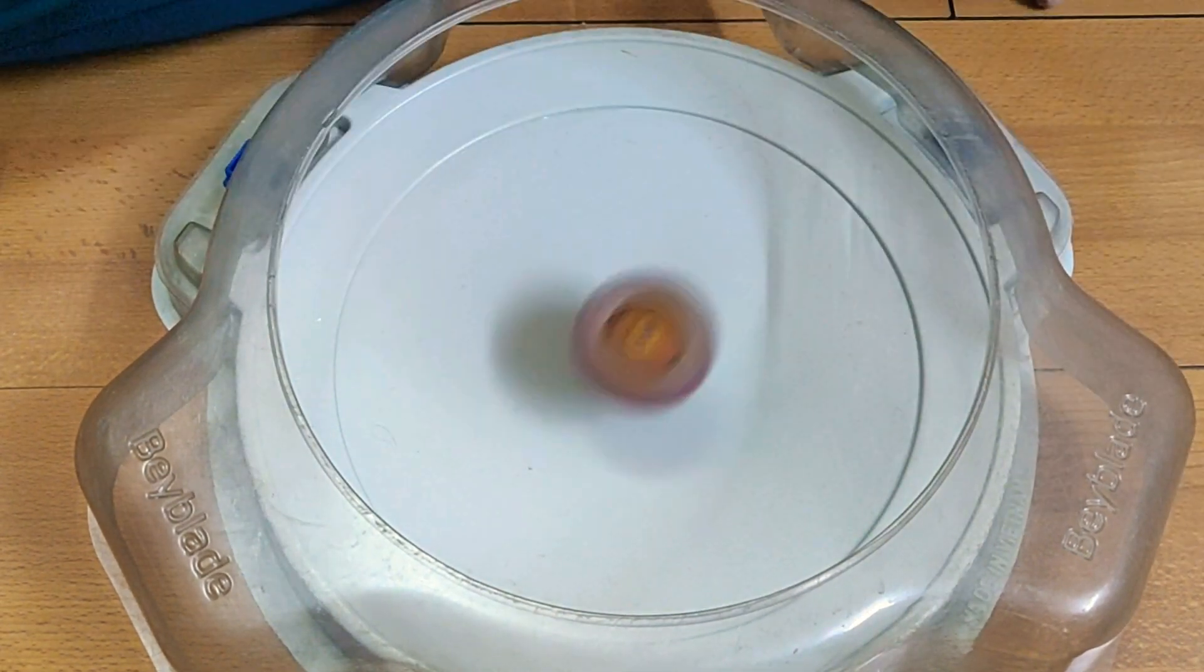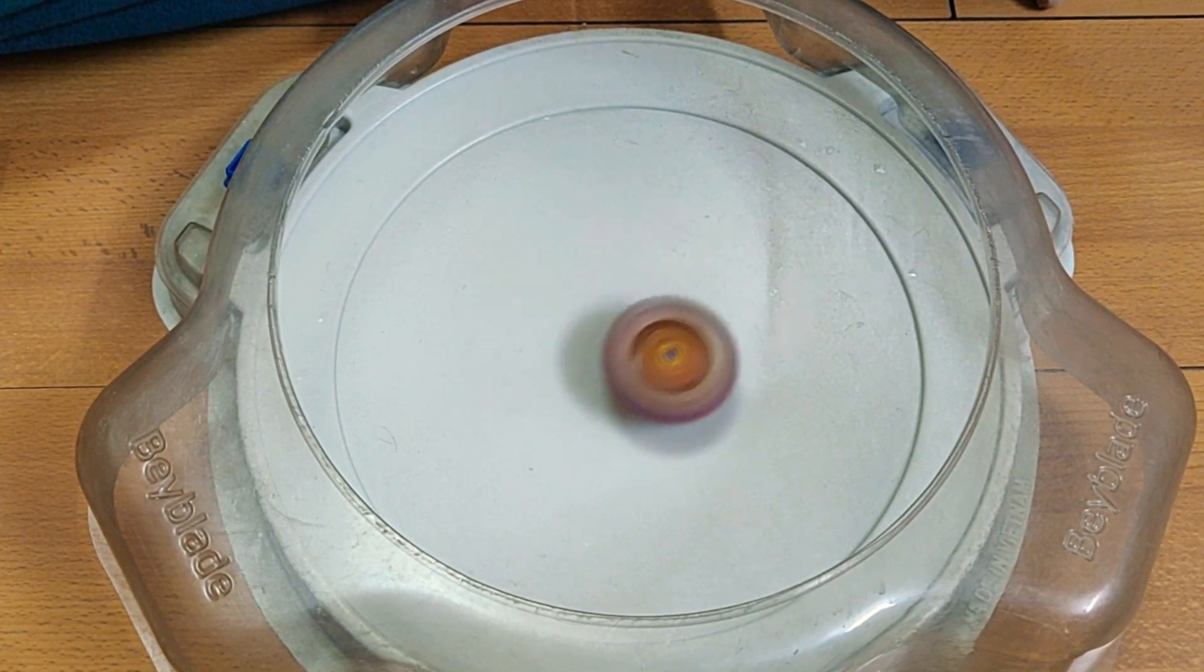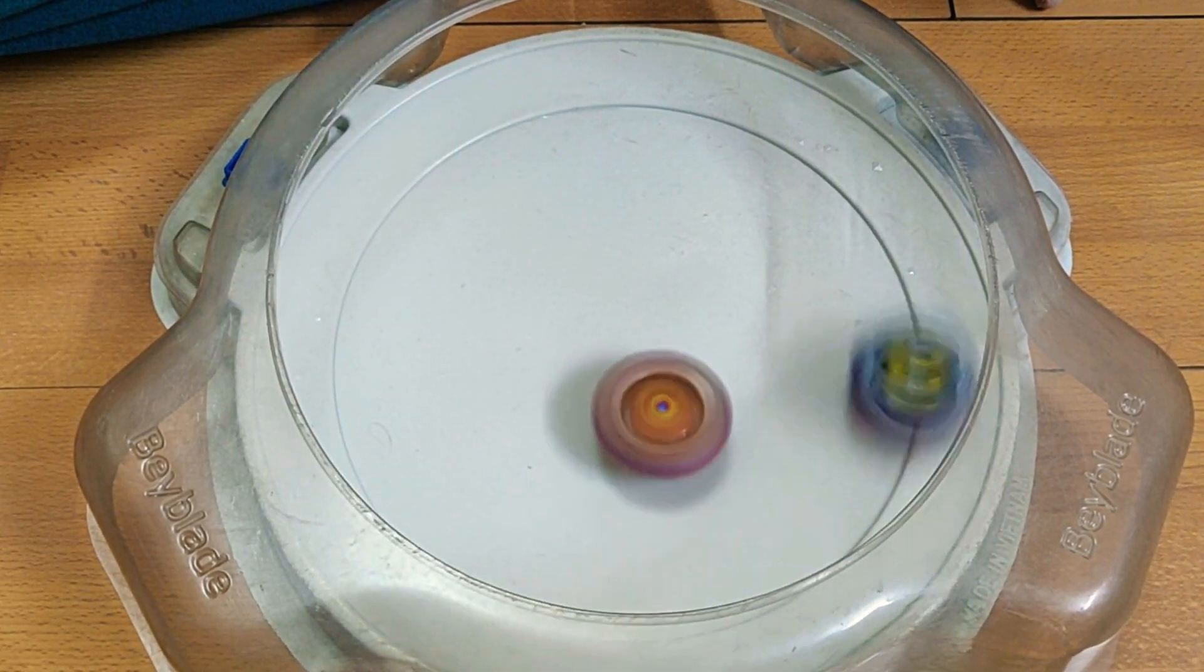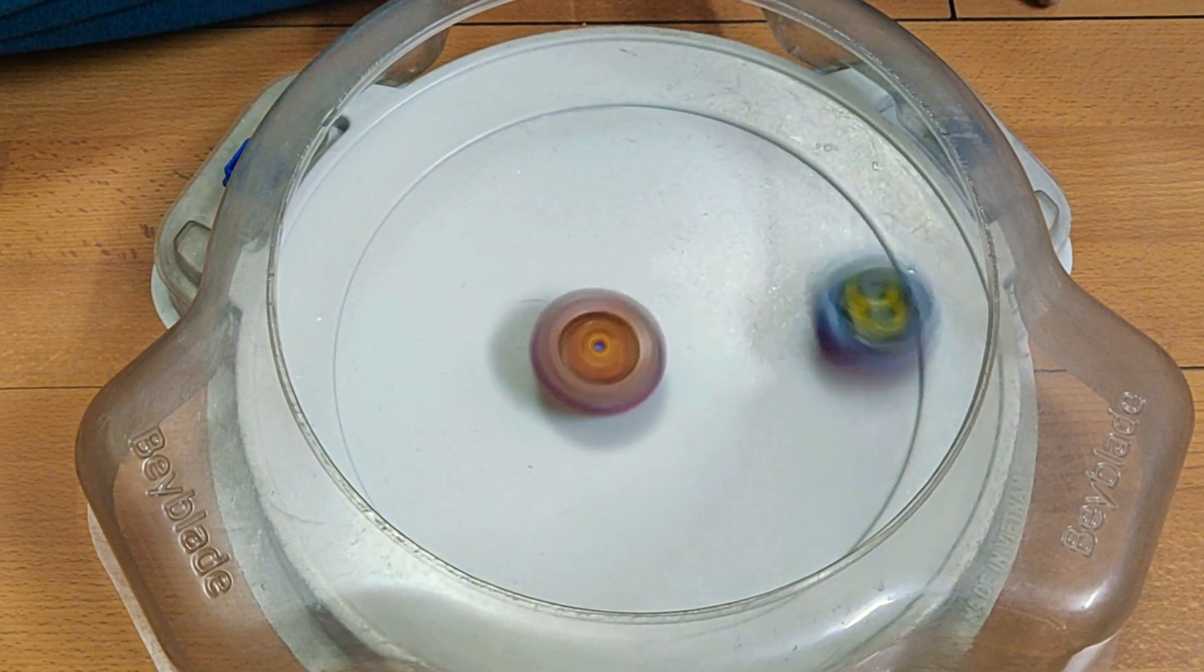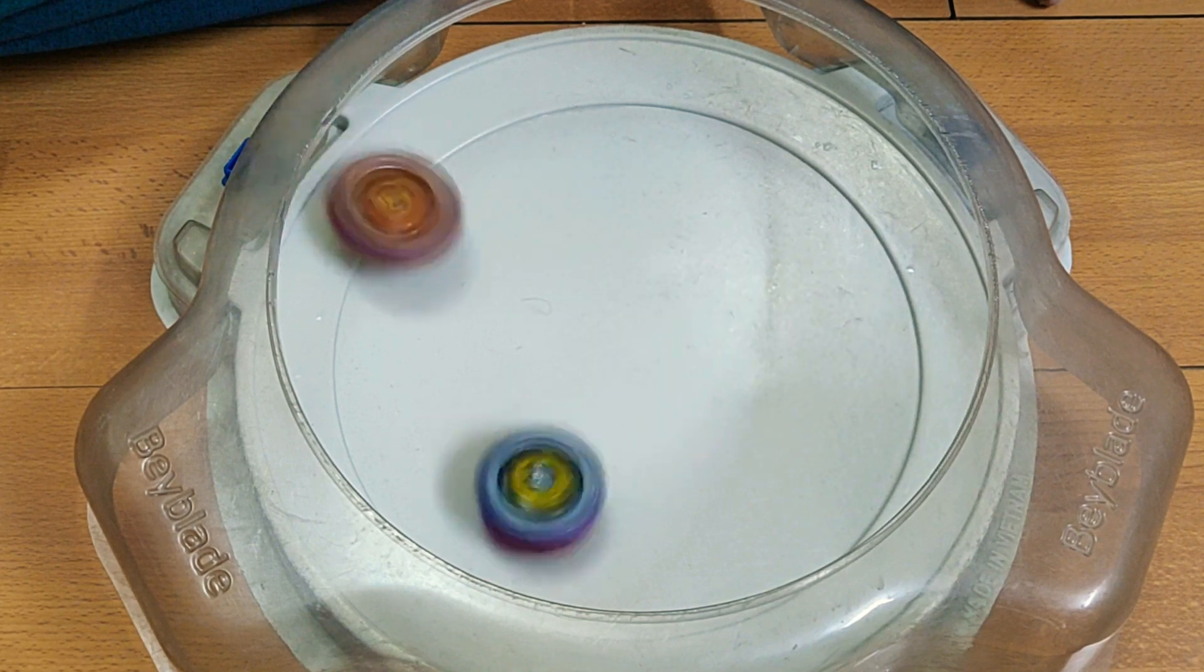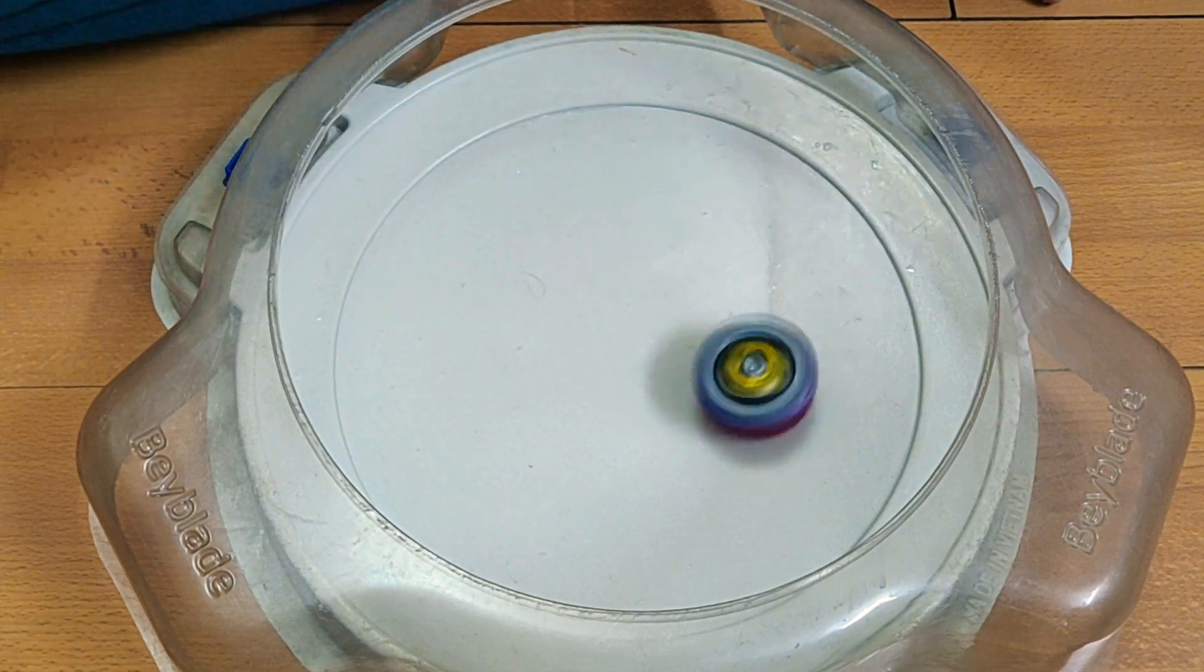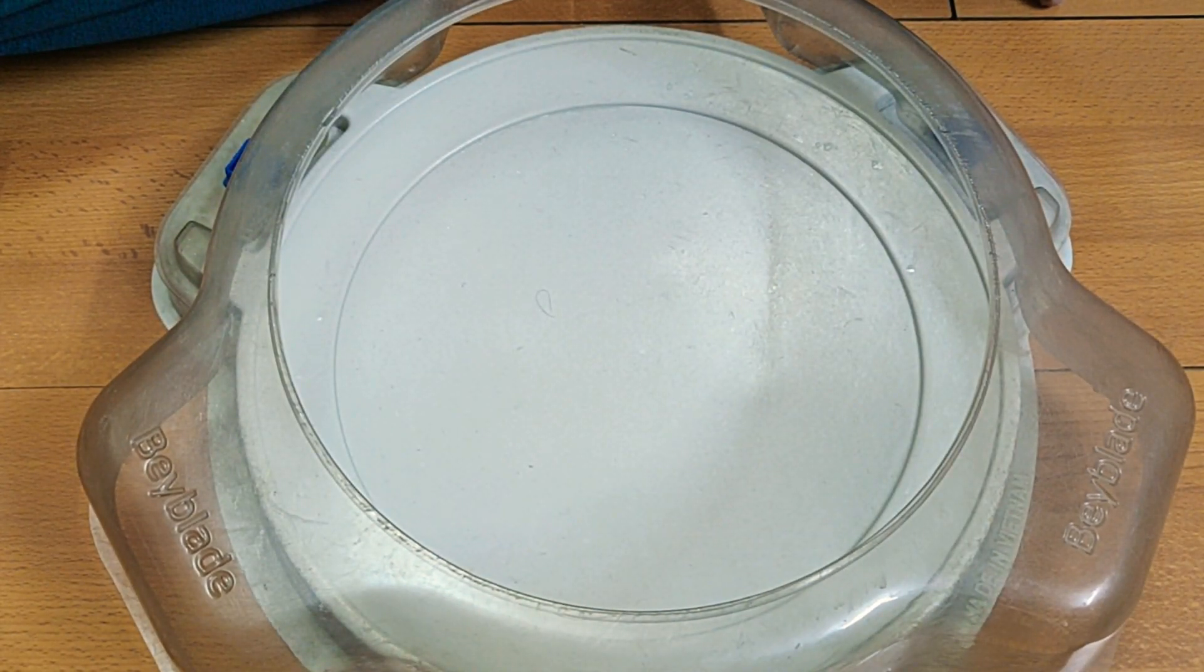3, 2, 1, go shoot! Oh, Dead Hades is going into the circular. That's 4 points to Dead Hades and 0 points to Aiga's Chosie Achilles.